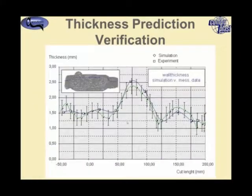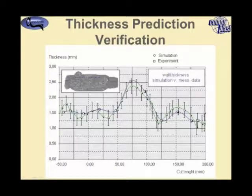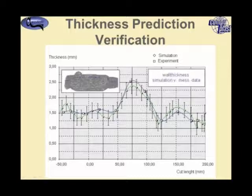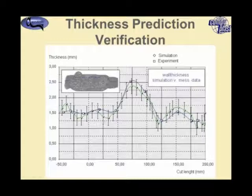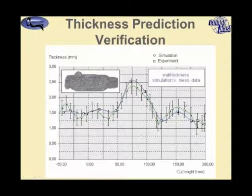In this project they verified the simulation against the final part. Along the dotted blue line they measured the thickness profile — the squares or blue line represents measured thickness along that line of the actual part, and the triangles represent the simulation results. As you can see, within the error bars of the simulation, the results are very close to reality.